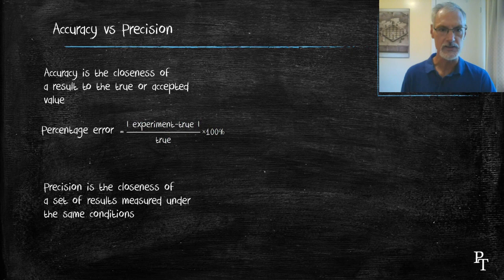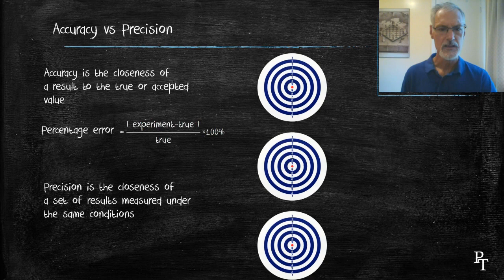Precision has to do with the closeness of a set of results done under the same set of conditions. Let's take a look at a dart game to look at the difference between these two terms.